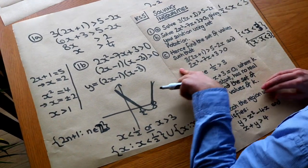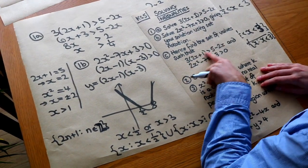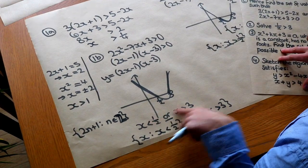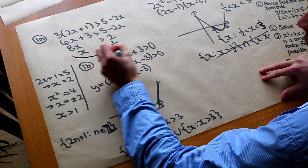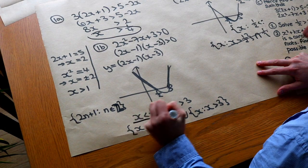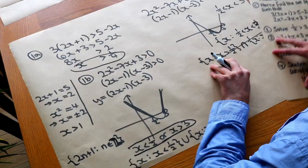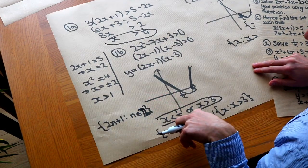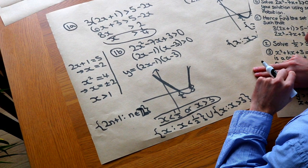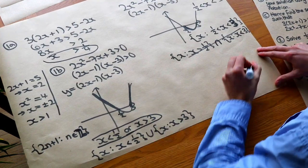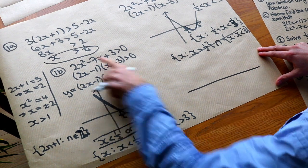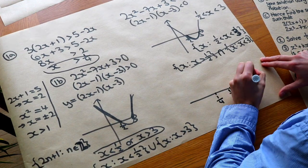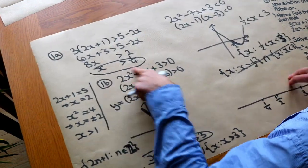Part C asks us to combine the results: we need both part A (x > 1/4) and part B (x < 1/2 or x > 3) to hold simultaneously. The easiest approach is to draw a number line. We mark the key values 1/4, 1/2 and 3, then represent each inequality as a separate number line - an open circle at 1/4 with an arrow going right, and x < 1/2 or x > 3 on a second line.